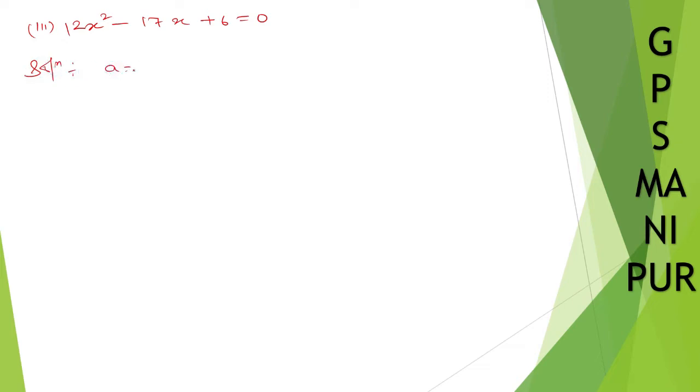So here a is equal to 12, b is equal to -17 and c is equal to 6. So therefore √(b² - 4ac) is equal to... find out b² - 4ac, that is b² it will be (-17)² minus 4 into a it is 12 into 6.